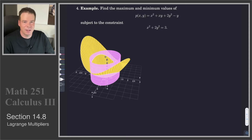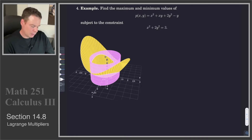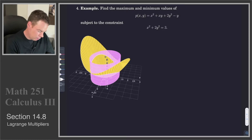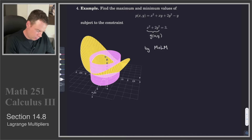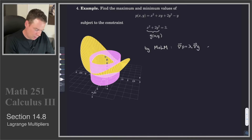Let's have a look at another Lagrange multipliers problem. We want to find the maximum and minimum values of the function p subject to the constraint that x squared plus 2y squared is equal to 3. In our constraint, we'll call this our function g of xy. By the method of Lagrange multipliers, we need to solve the corresponding equations: the gradient of p has to be some multiple of the gradient of g, and we need the constraint equation to hold.